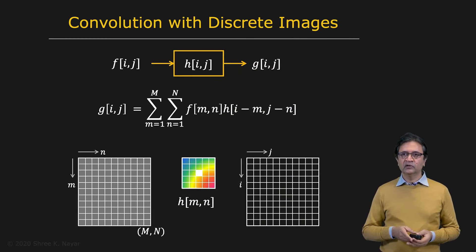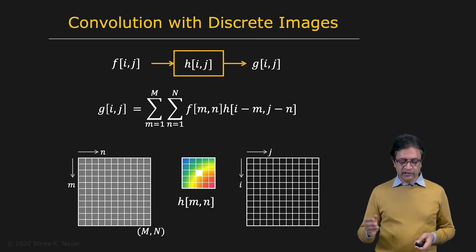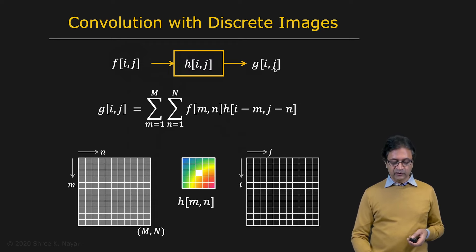But first, let's take a look at how convolution works in the case of discrete images. So here is your discrete image, F_ij. I corresponds to the row number, perhaps, and J is the column number. So IJ is the location of a pixel. The extent of the image, the size of the image, is large M and large N. And that's being convolved by some impulse response, H_ij. And the output is G_ij, which is also an image of the same size.